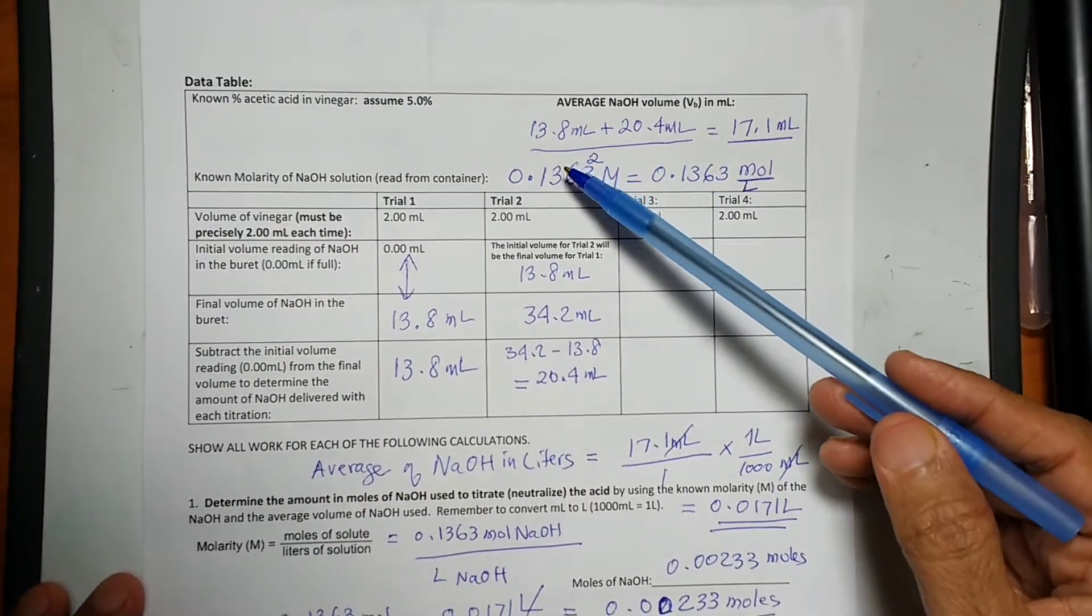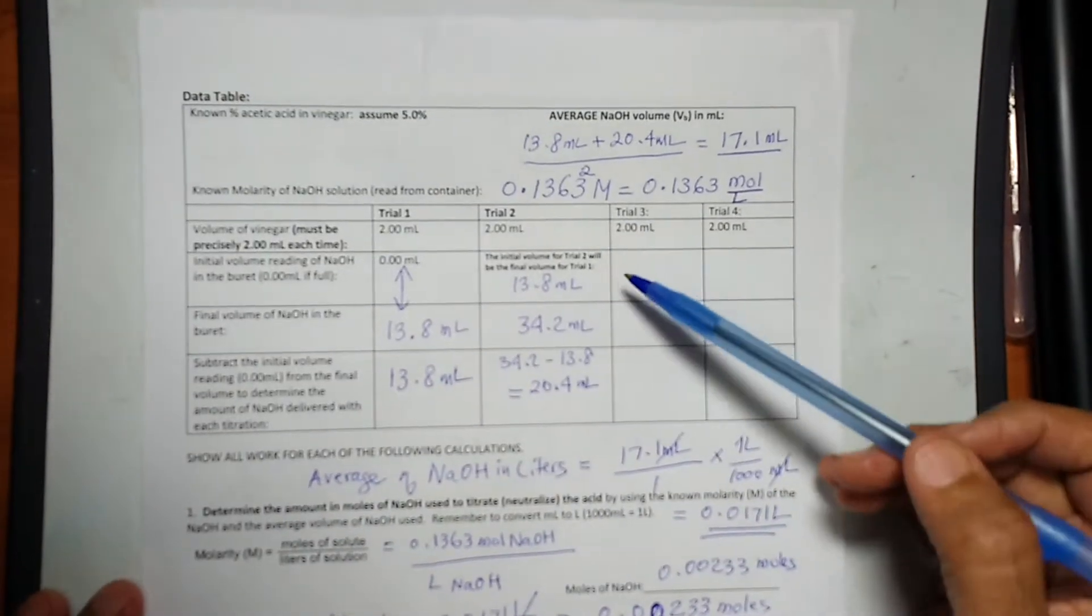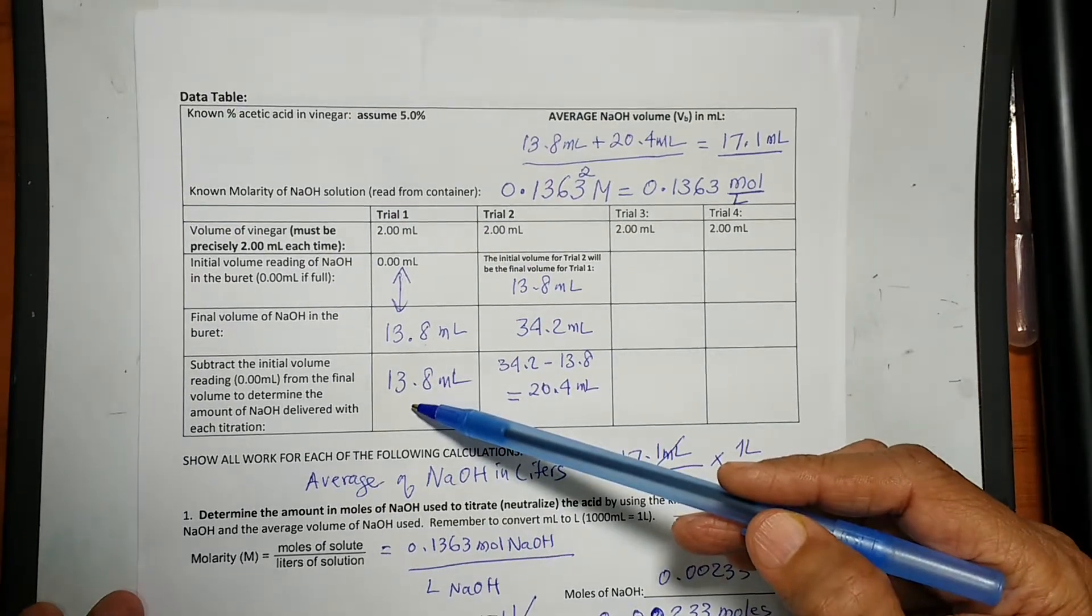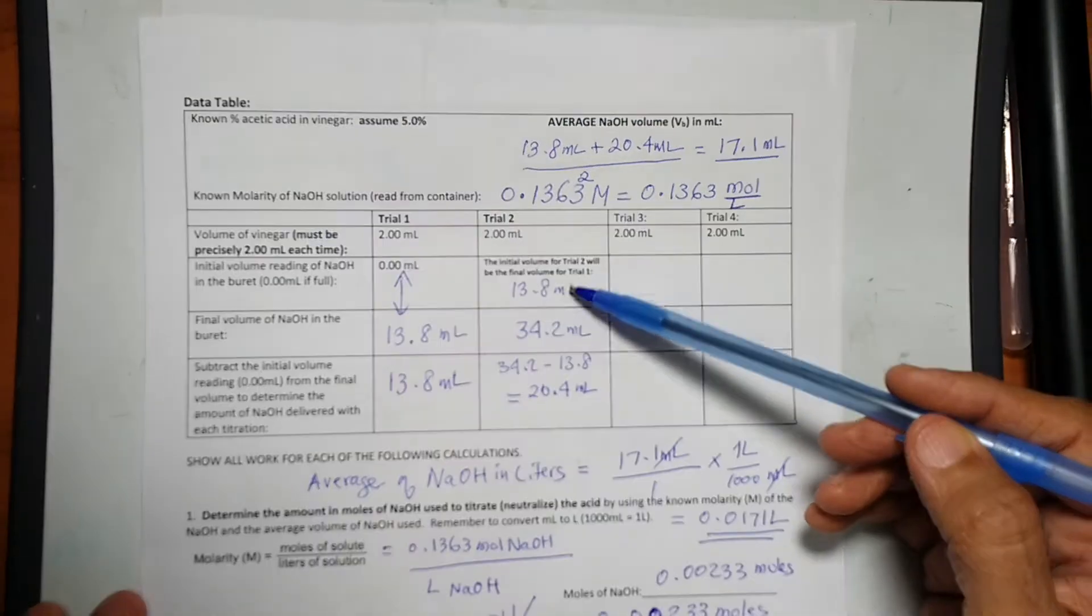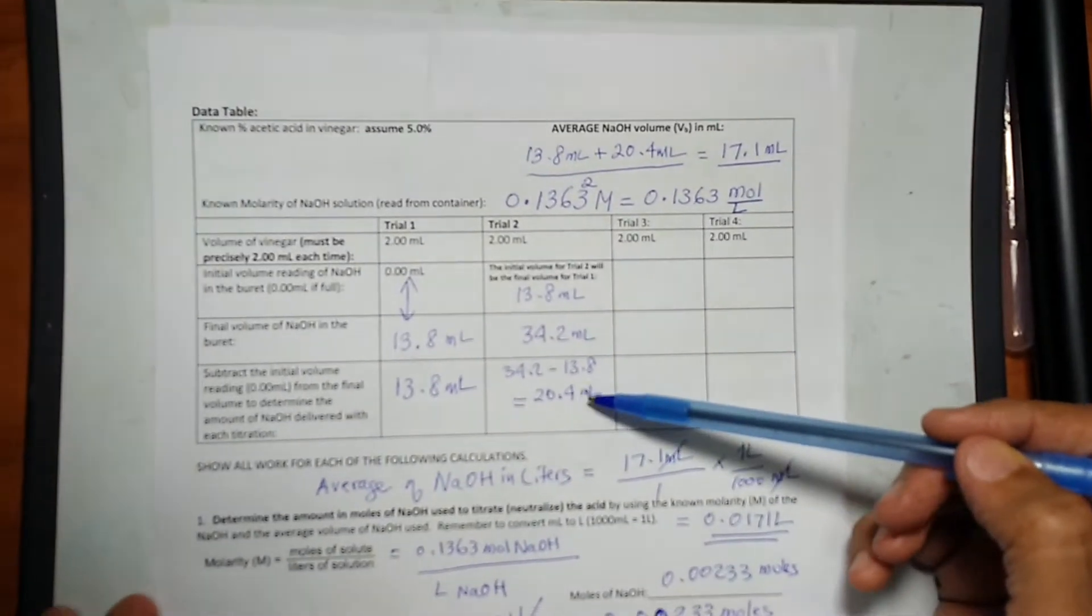They found the first titration to be 13.8 mL, and the second titration is a little bit larger than the first one, it's 24.5 mL.